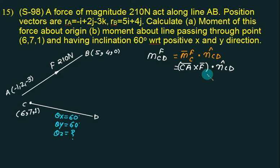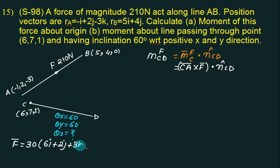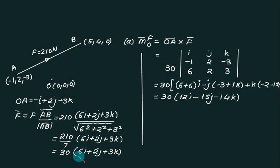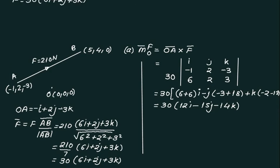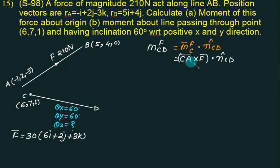F bar is already known: F equals 30 times (6i plus 2j plus 3k). The additional vector required is CA, which equals A minus C: minus 1 minus 6 gives minus 7i; 2 minus 7 gives minus 5j; minus 3 minus 1 gives minus 4k.